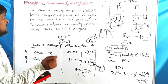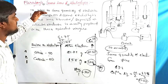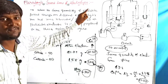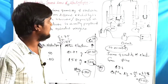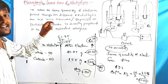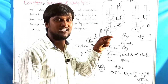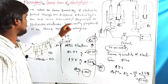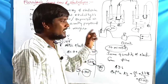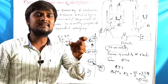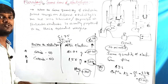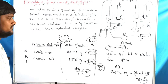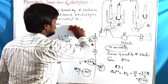To summarize: when the same quantity of electricity is passed through different electrolytes, the ions liberated or deposited at particular electrodes are directly proportional to their equivalent weights. This is the statement of Faraday's Second Law of electrolysis.